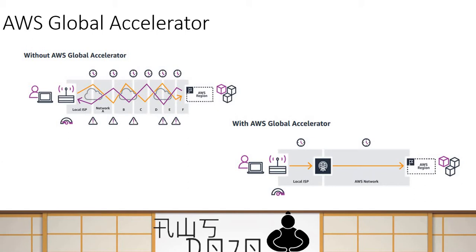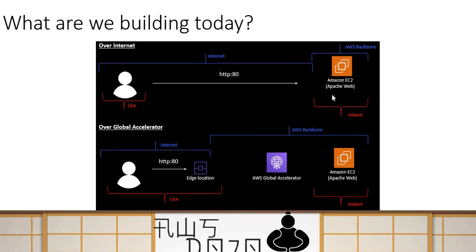I've done some testing with this scenario — placing my application in Sydney and accessing from Europe, or vice versa — and I've seen significant improvement in application performance. Today I'm going to show you how such a configuration is done, and there's an exercise you can run yourself. We'll keep it simple: we'll have an EC2 instance running in Ireland, deploy Apache web server on it, first access the endpoint over HTTP over internet, and then use Global Accelerator to optimize the path using the AWS backbone.